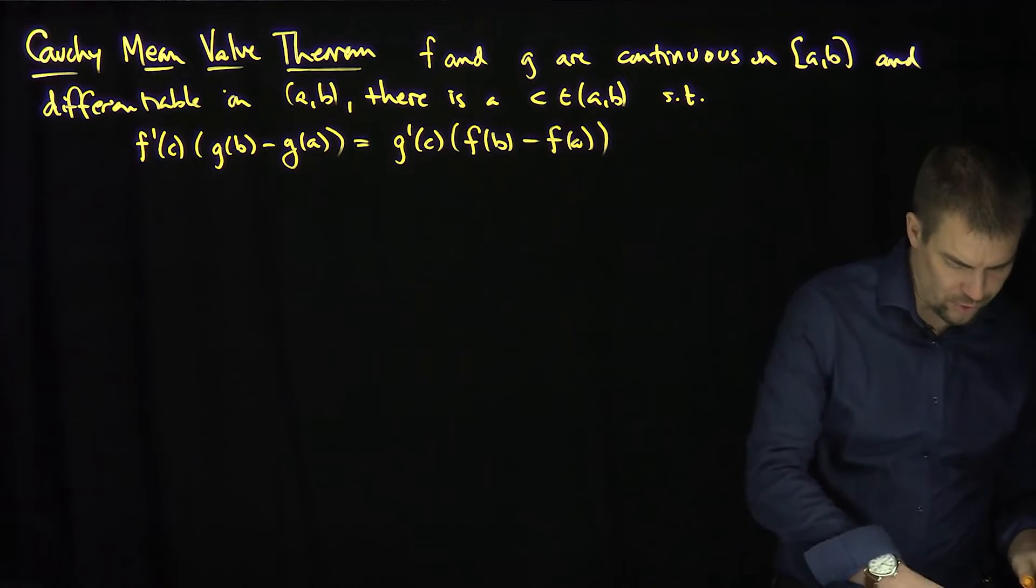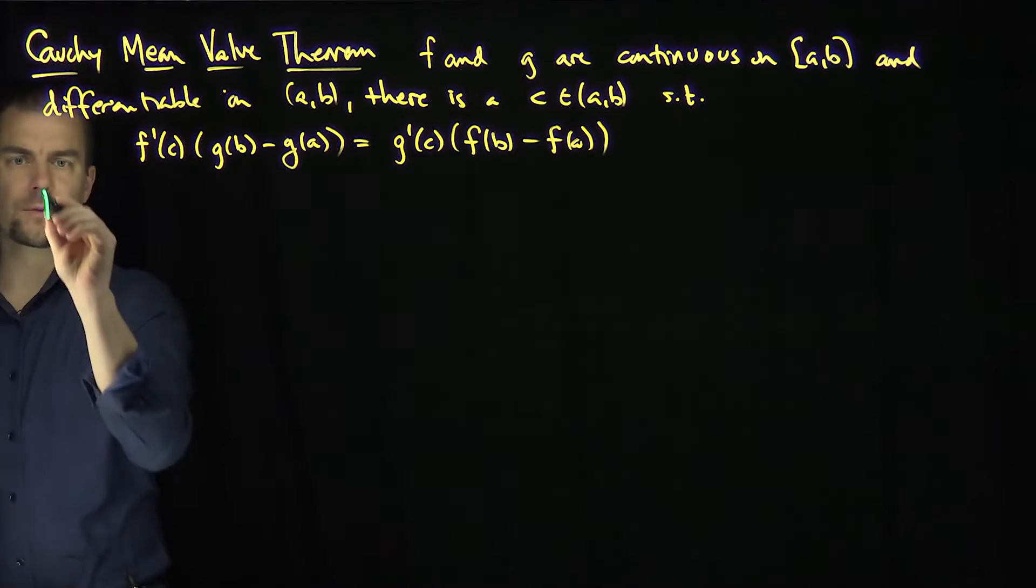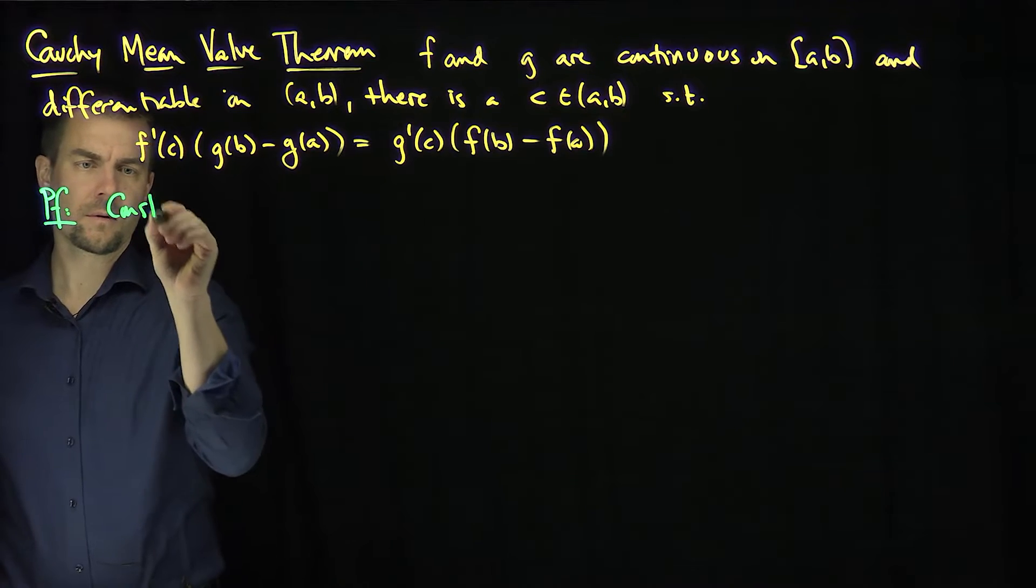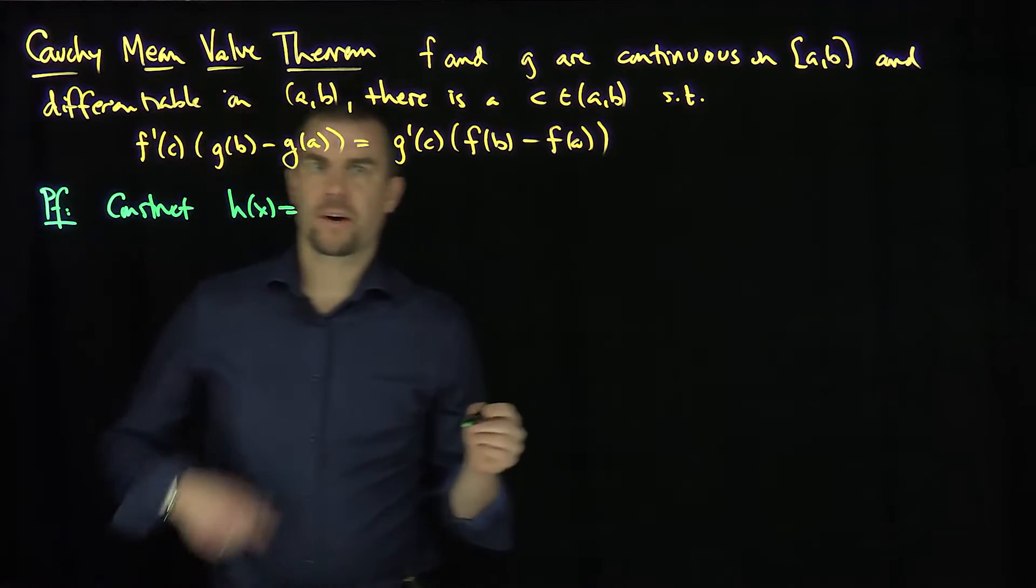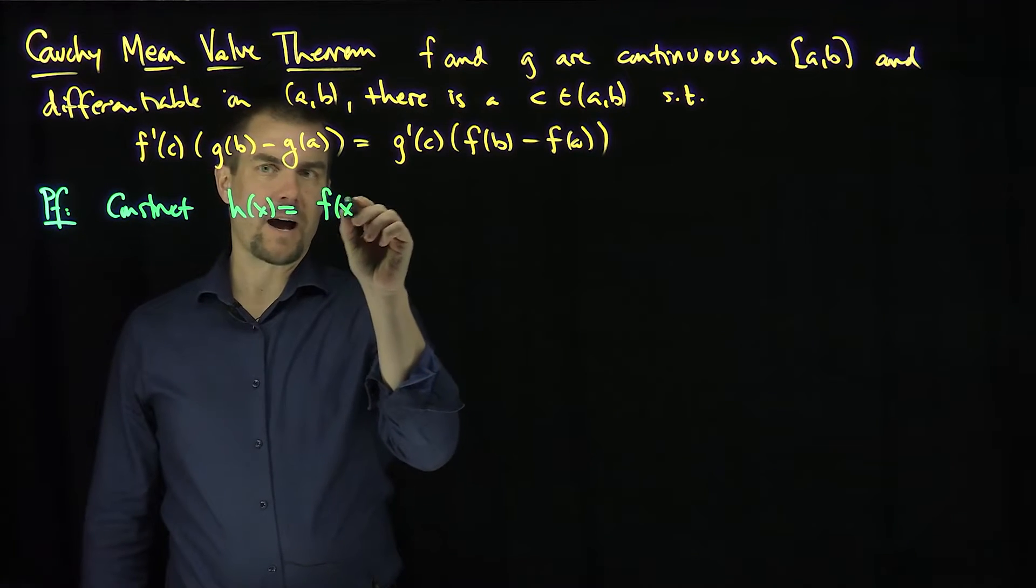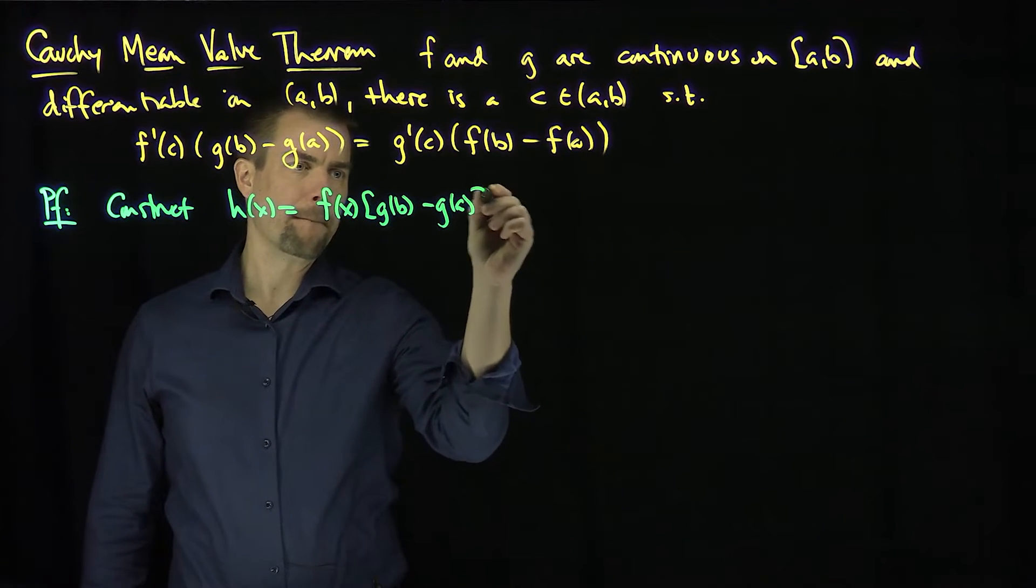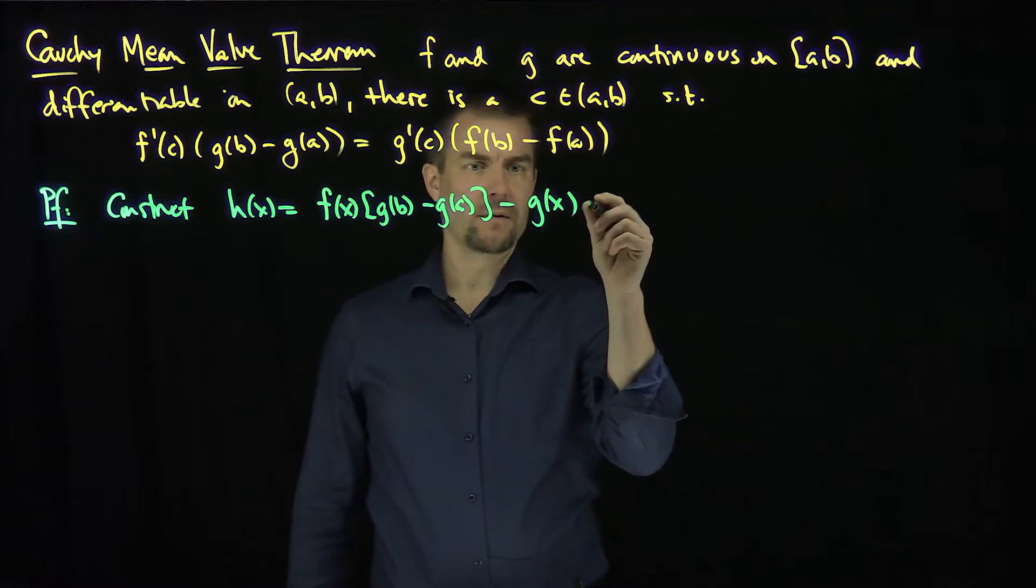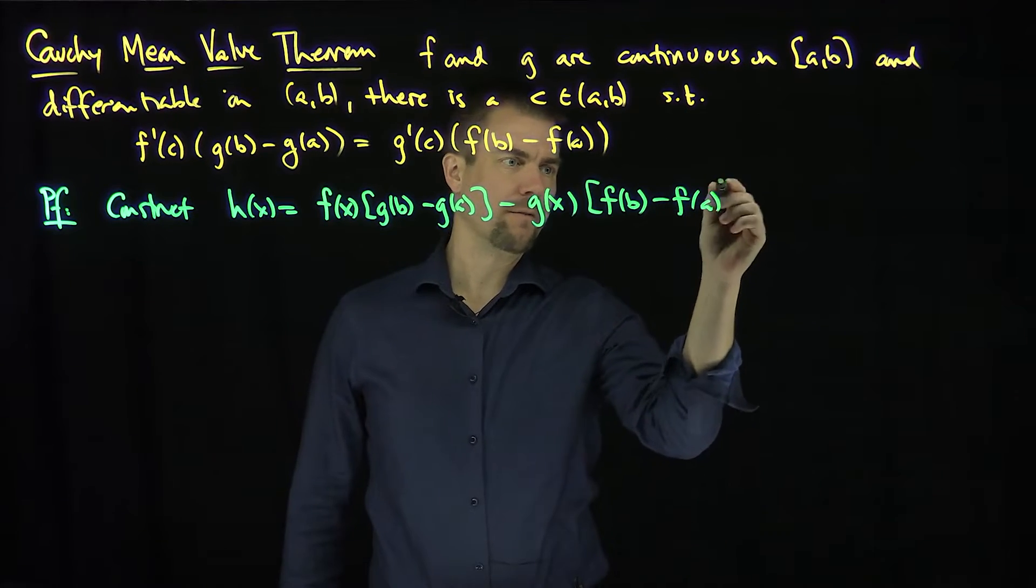So how do we prove this generalized version of the mean value theorem or this Cauchy Mean Value Theorem? Well, the proof goes as follows. I'm going to construct a function h(x). And what is h(x)? So I'm just going to follow what the theorem is basically encouraging me to do. It's going to be f(x)[g(b) - g(a)] - g(x)[f(b) - f(a)]. So there's a function.